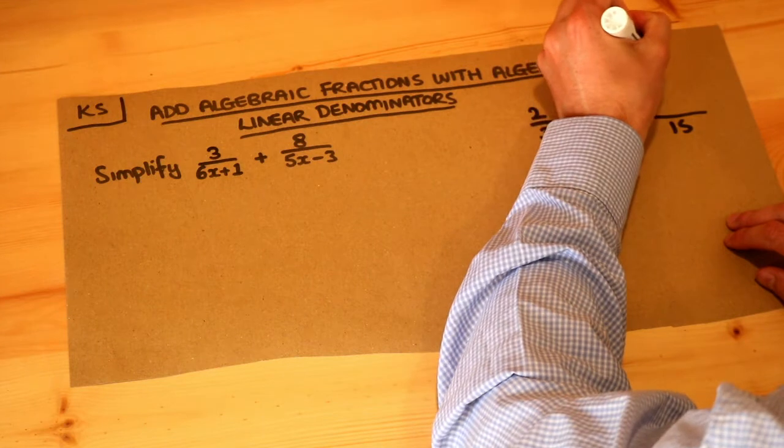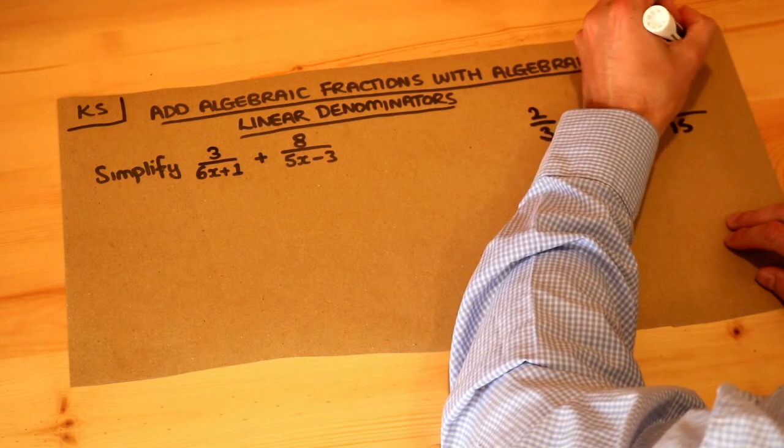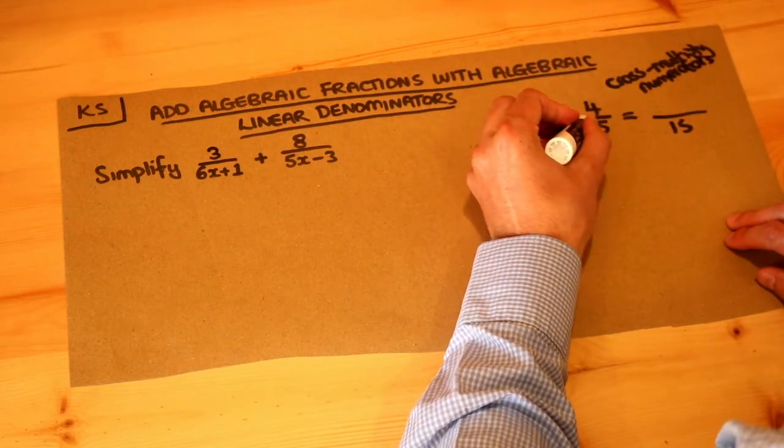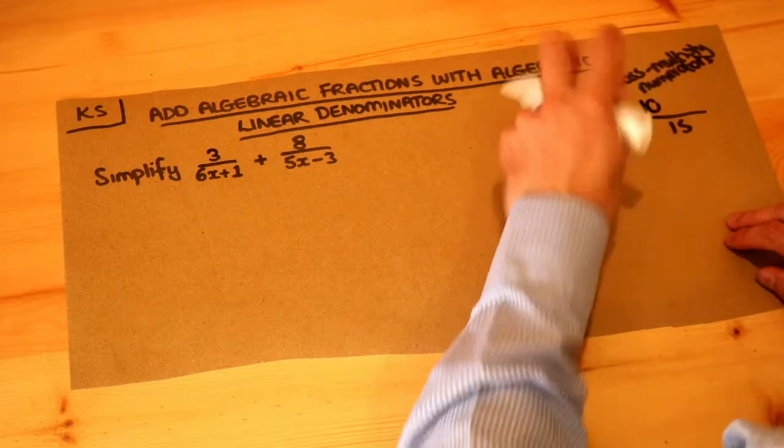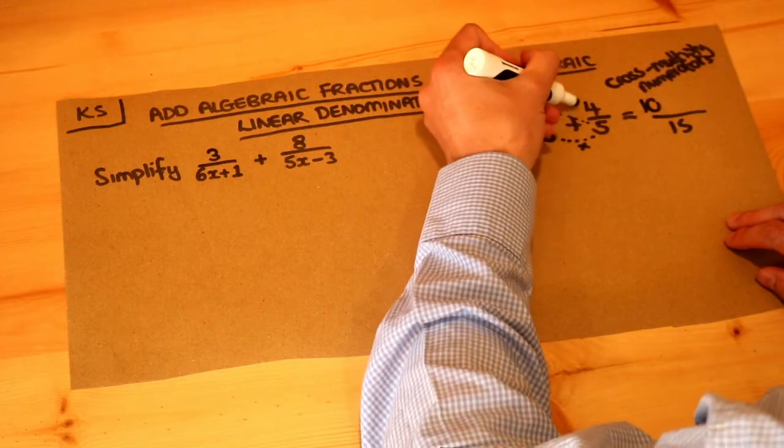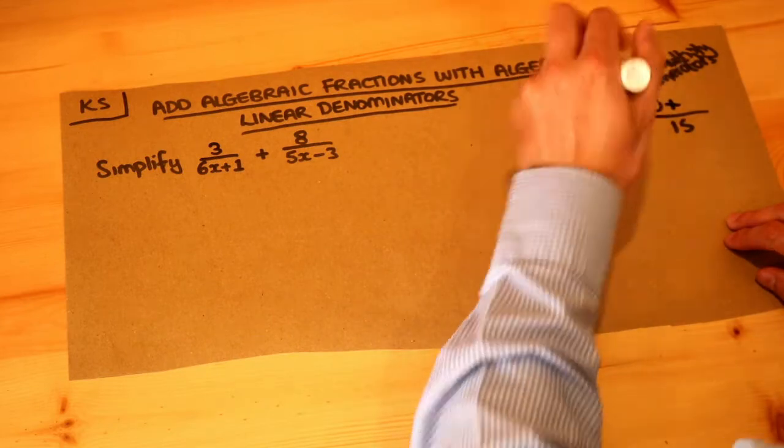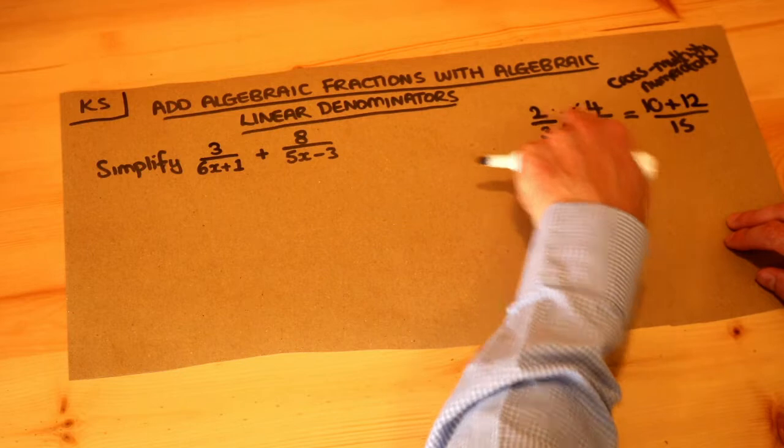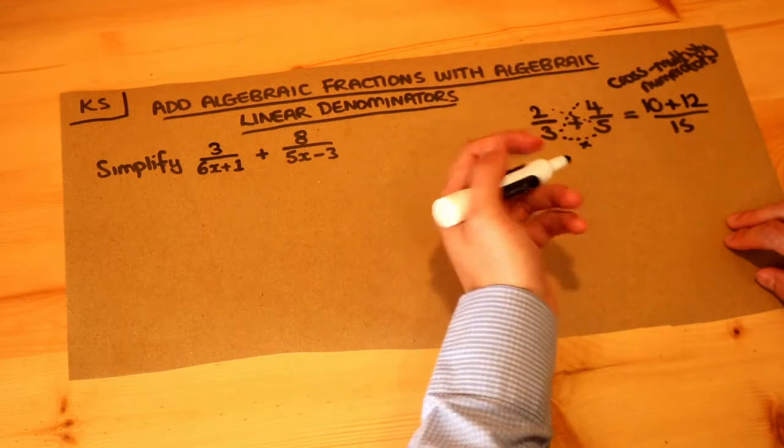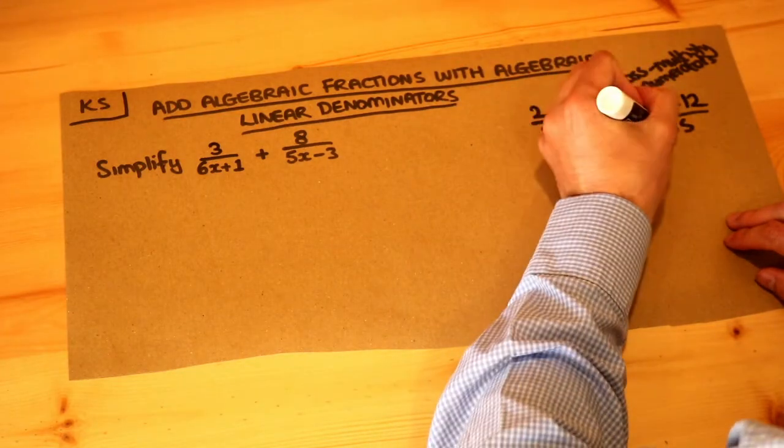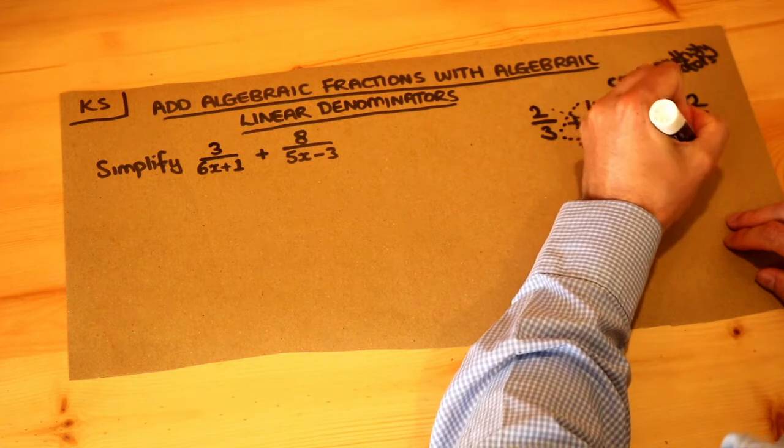So we cross multiply the numerators, so we do the 2 times the 5, which is 10, in a kind of diagonal fashion, and the 4 times the 3. So we put the plus in the middle, plus 4 times the 3 is 12. So we get this kind of cross in the middle, that's why it's called cross multiplying. And then that will give you 22 over 15, which is the final answer.